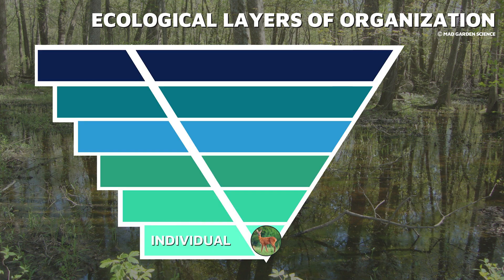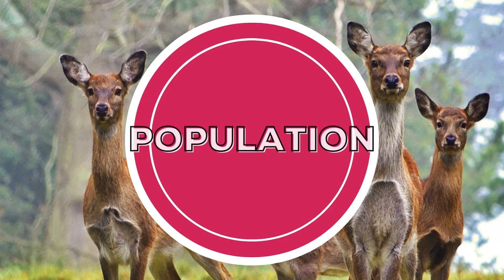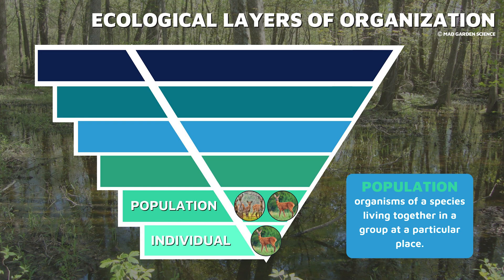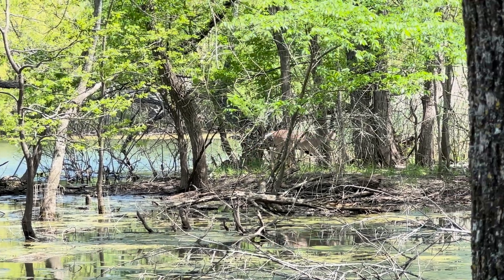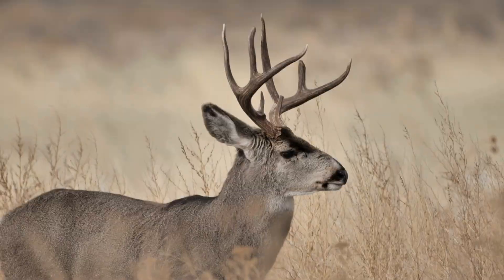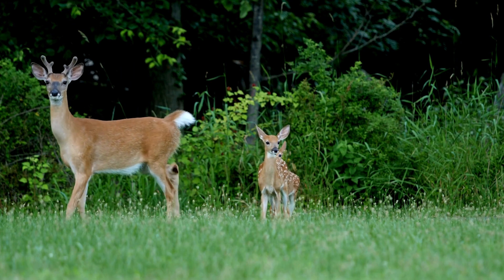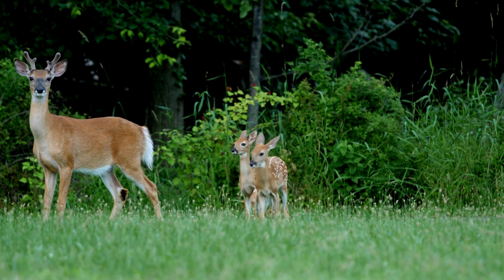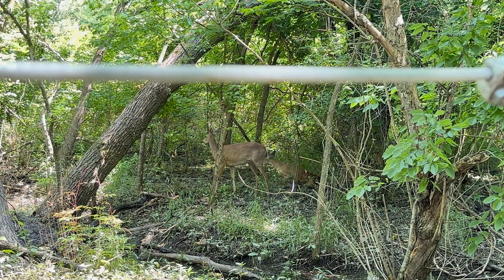If we zoom out, we'll find how this deer is connected to the layers of ecological organization. This deer is an individual, but it's connected to all the other deer in this area, and together they form the population. A population is a group of individuals of one species that occupies a particular geographic area. So all the deer here in this nature preserve — the male deer, female deer, young, and old deer — as long as it's this species of deer, it belongs to this population.